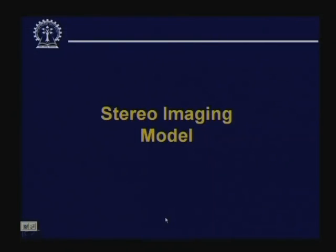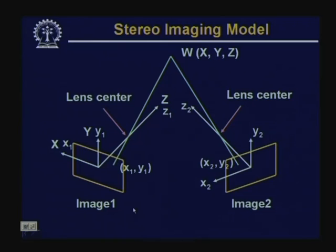However, given a single image point, we cannot uniquely identify the 3D world location. To recover all three coordinates X, Y, Z of a 3D world point, we can use a second camera. In such a stereo setup, image 1 is captured by camera 1 (coordinate system x1, y1, z1) and image 2 by camera 2 (coordinate system x2, y2, z2). We assume the 3D world coordinate system is aligned with the left camera.